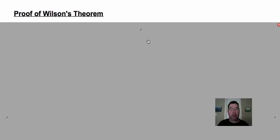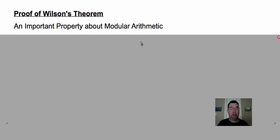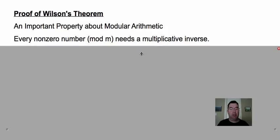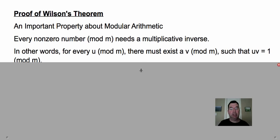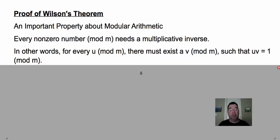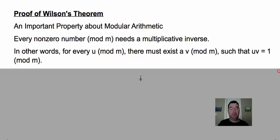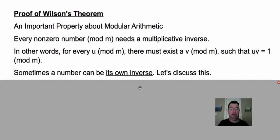The proof of Wilson's Theorem starts with a discussion about an important property about modular arithmetic. For every modulus m that I use, there has to be a multiplicative inverse of every nonzero number in that modulus. What that means is, for every number in that modulus, there has to exist another number. Let's call those numbers u and v. There has to exist a v for every u, so that when you multiply those two together, you get one, because that's what a multiplicative inverse is.